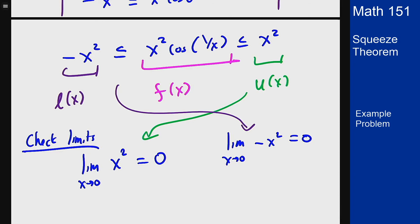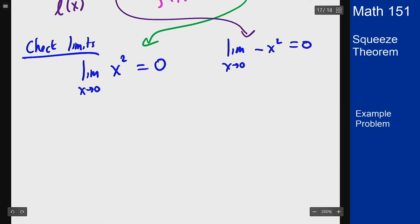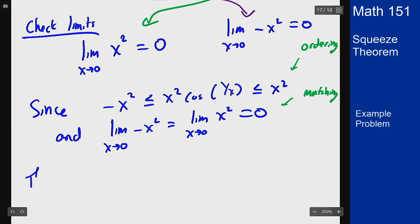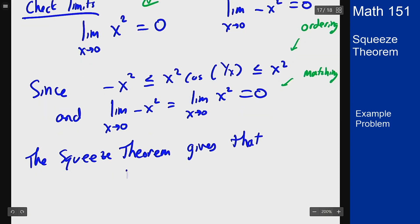So then how would you conclude this to write the actual statement? The way you'd write this up is something like this. Since negative x squared is less than or equal to x squared cosine of 1 over x is less than or equal to x squared, and the limit as x goes to 0 of negative x squared equals the limit as x goes to 0 of x squared equals 0, the squeeze theorem gives that the limit as x goes to 0 of x squared times cosine of 1 over x equals 0.